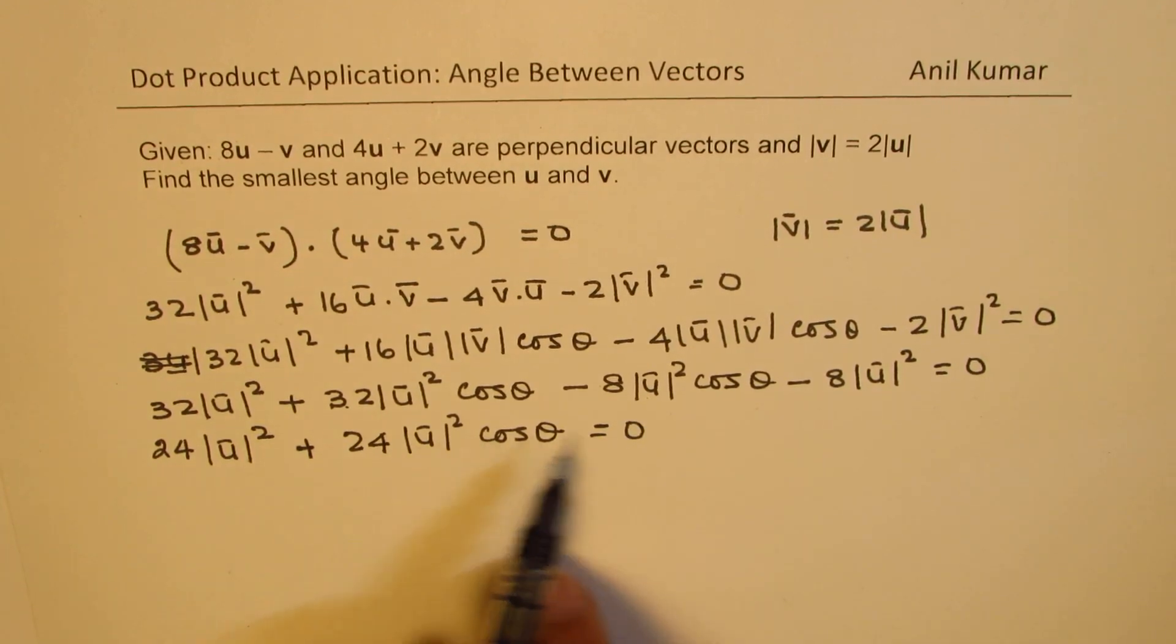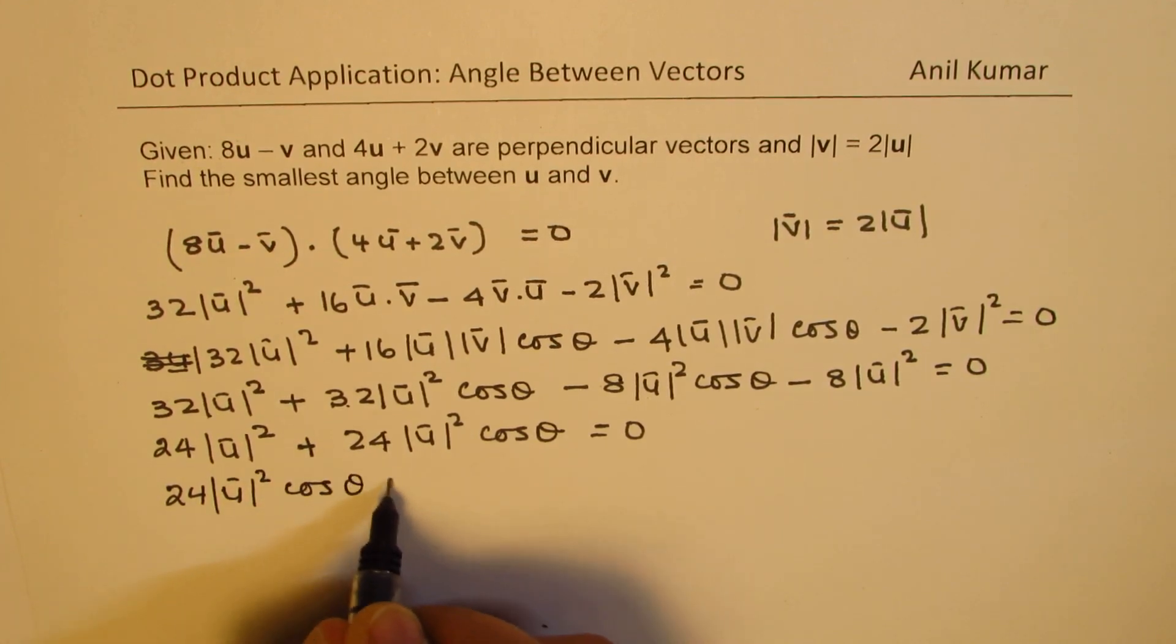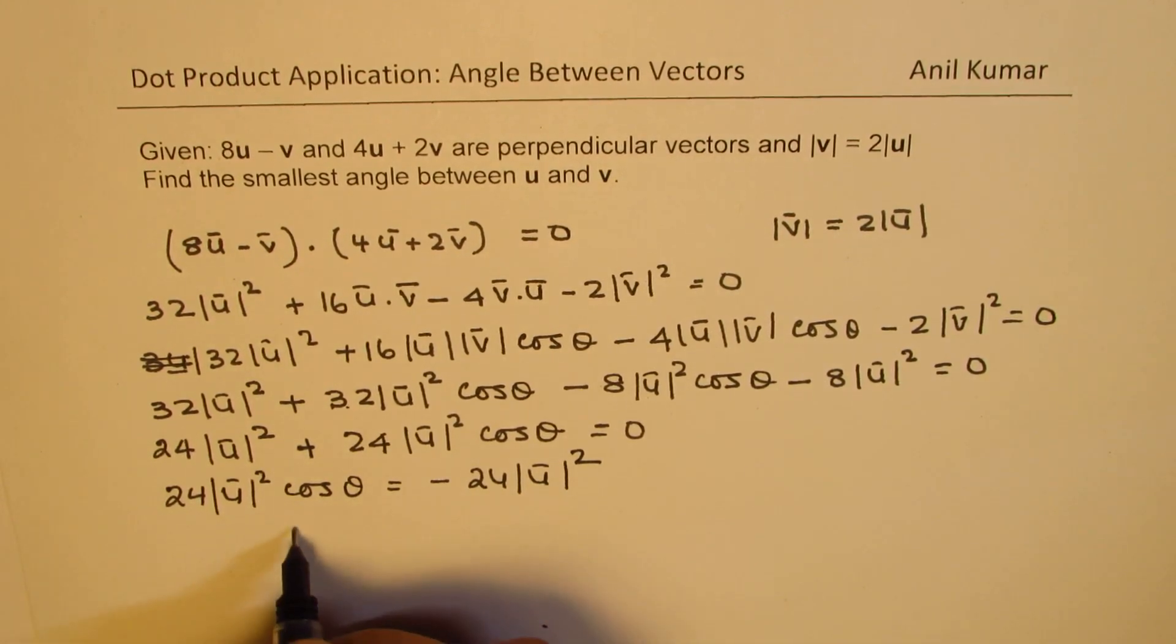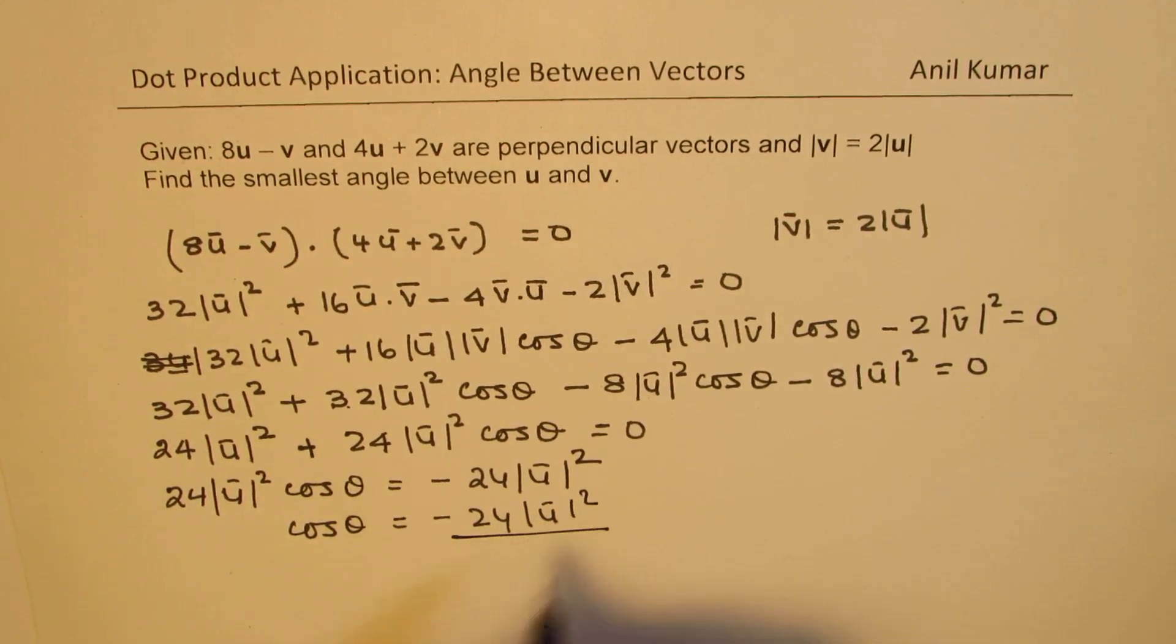Taking cos theta to the right side, 24 can cancel, or you can write 24 magnitude of u squared cos theta equals minus 24 magnitude of u squared. So cos theta equals minus 24 magnitude of u squared divided by 24 magnitude of u squared. Clearly, it equals minus 1.